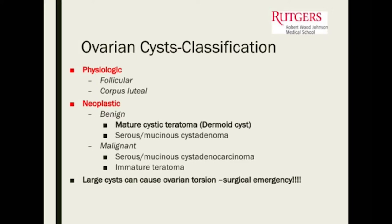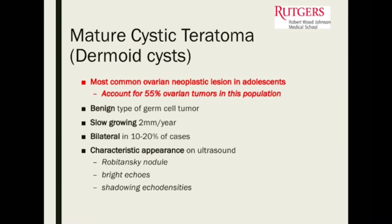In the adolescent population, these are often patients who haven't yet seen a gynecologist, and they present to the emergency room with acute pelvic pain. They may be presenting with an ovarian torsion.